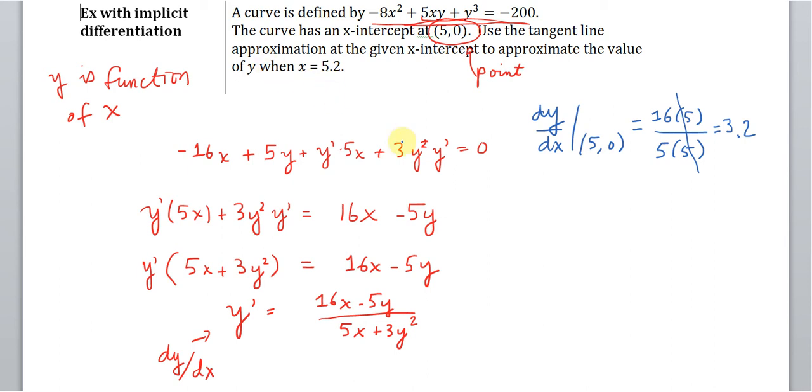And we want to use this to estimate the value of y when x is equal to 5.2. So we need to write the tangent line equation. So it's going to be y - 0, so we're still using this point, is equal to the slope, which is 16/5 times (x - 5).